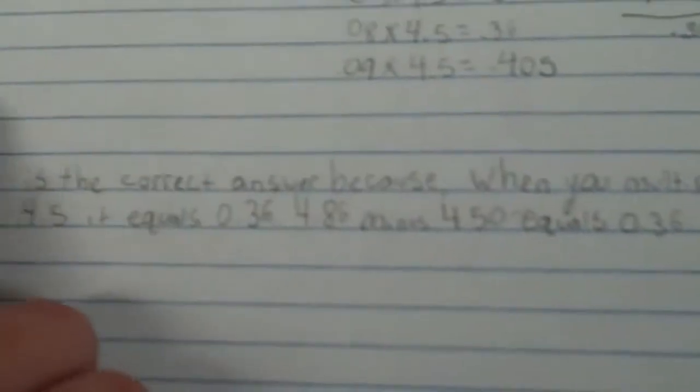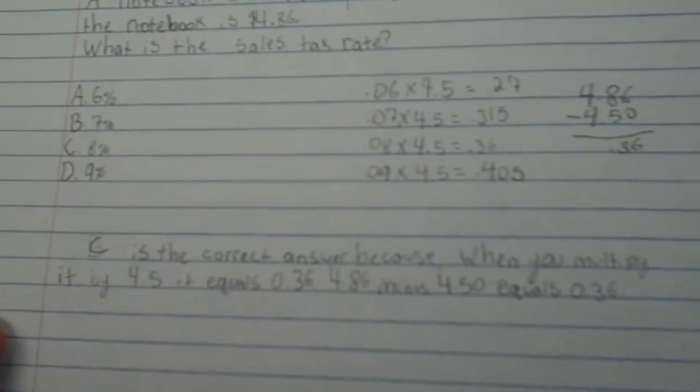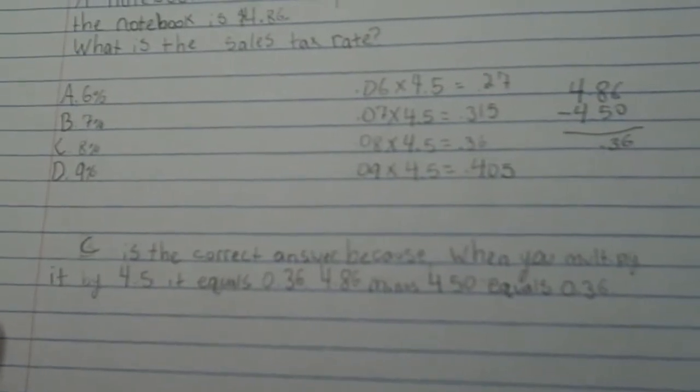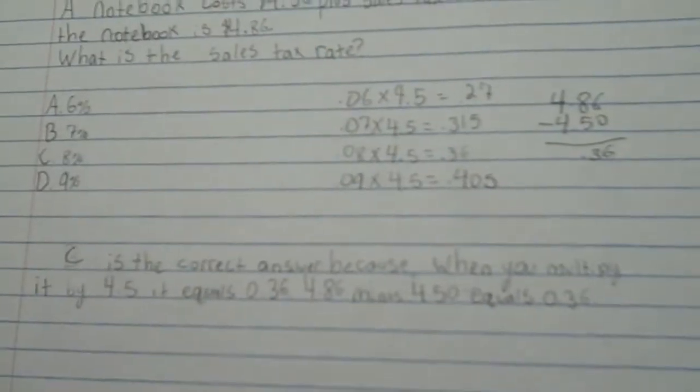So then C would have been the correct answer here, because when you multiply 8% by 4.5, it equals 36 cents, which is exactly what you need to get to $4.86.